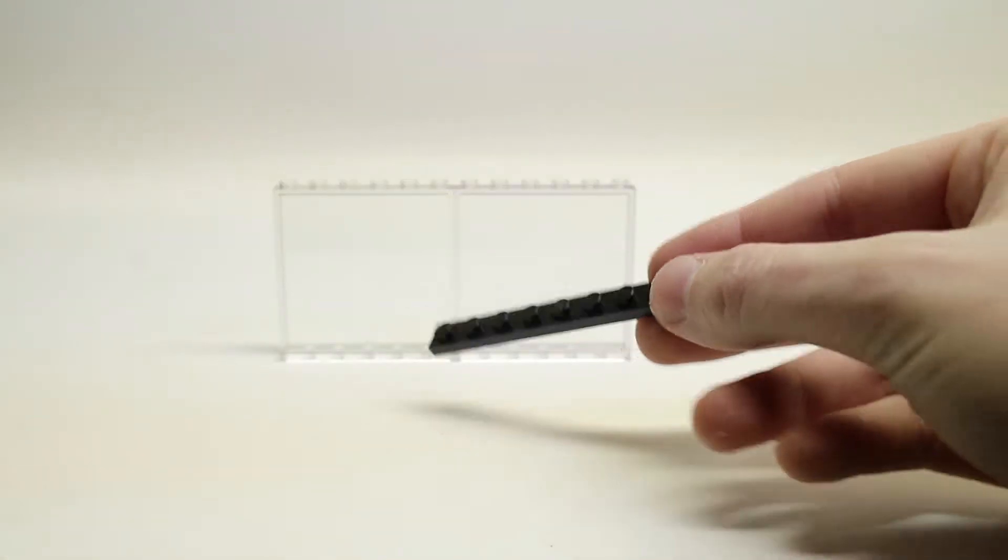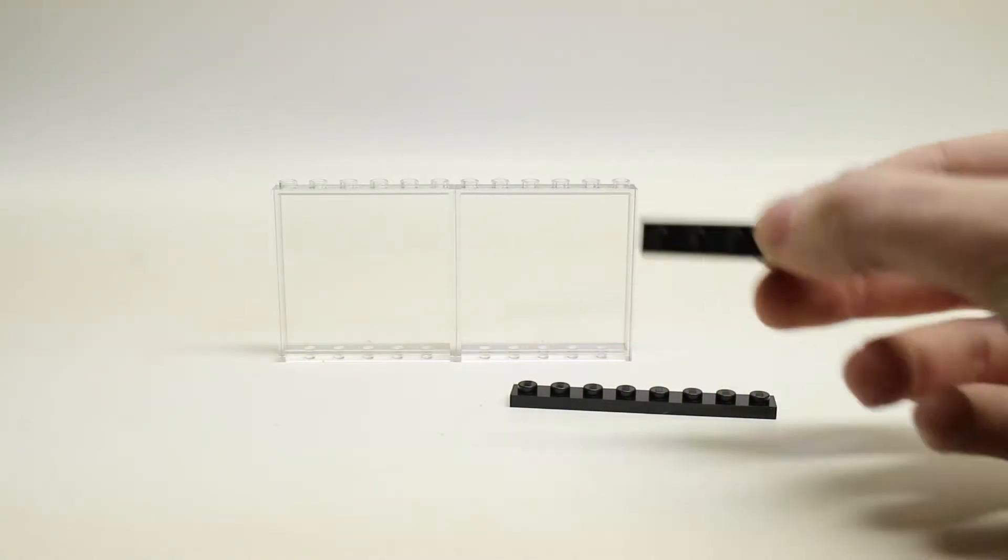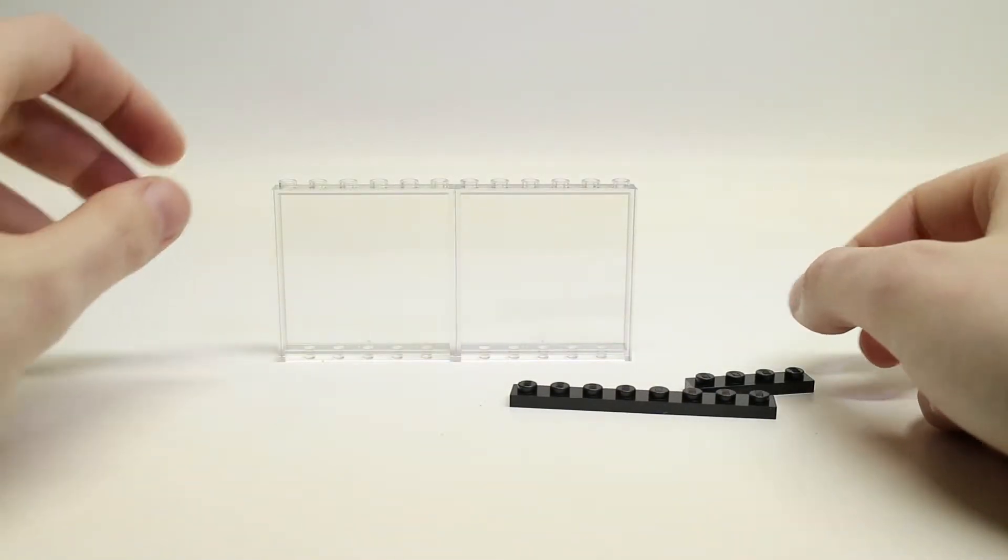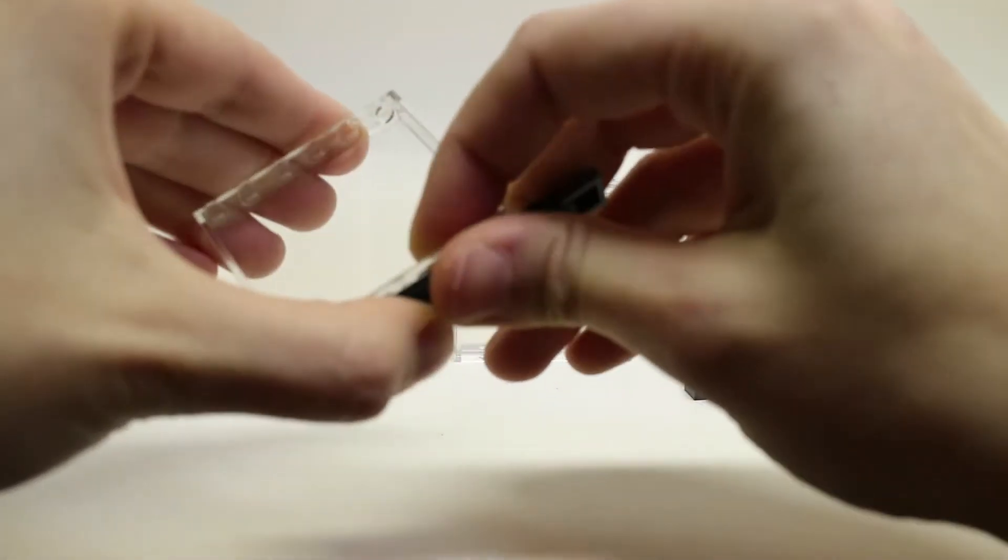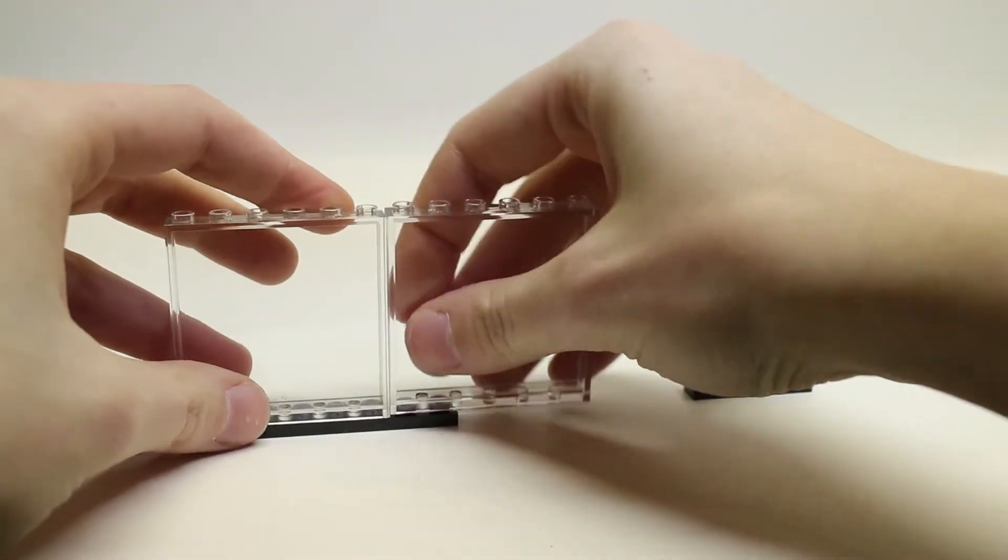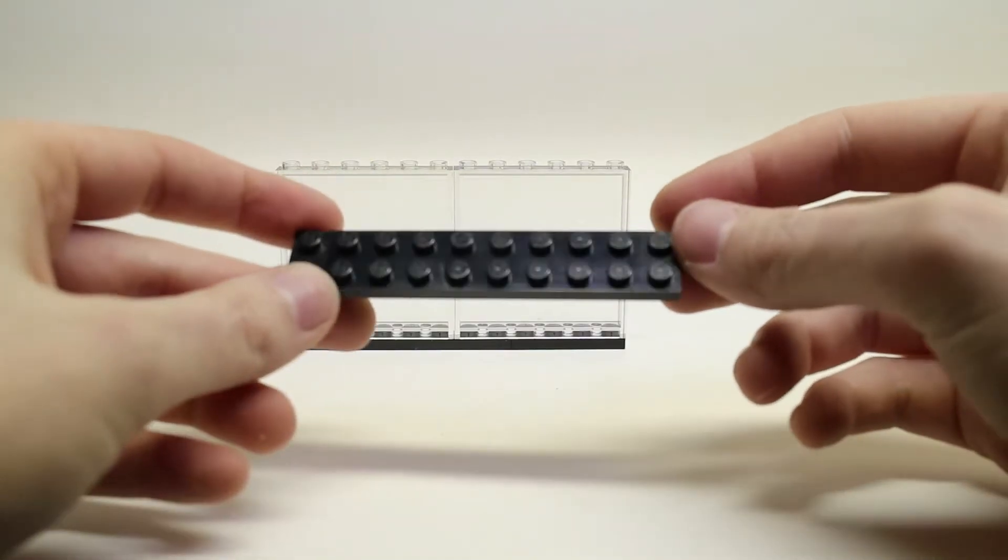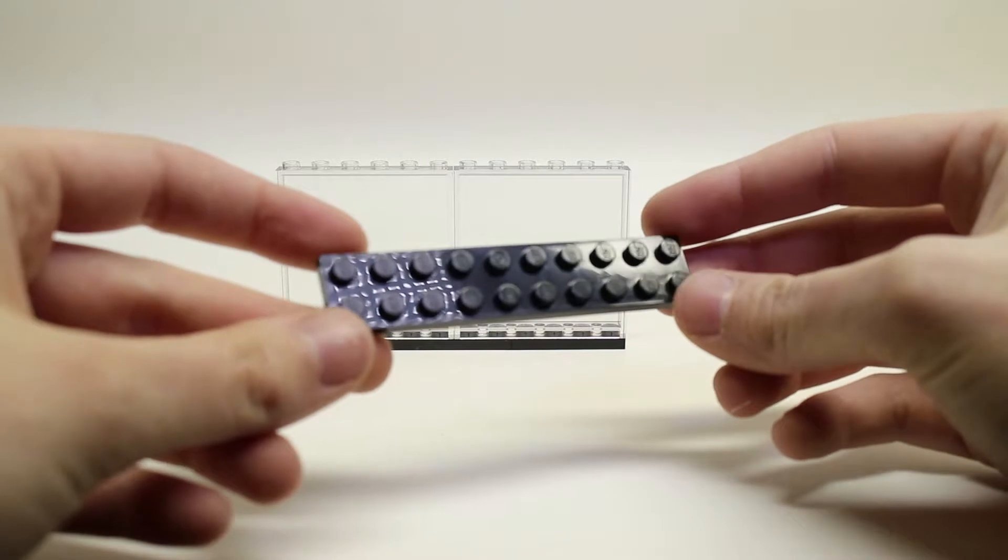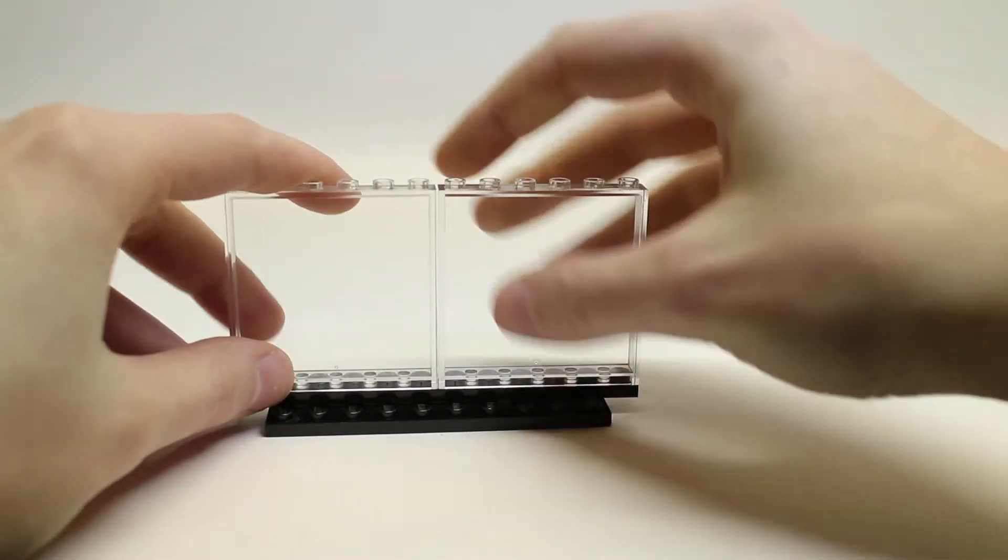And you're going to secure them to the bottom like so. Next you're going to take your 2 by 10 black plate and place that in the middle like so.